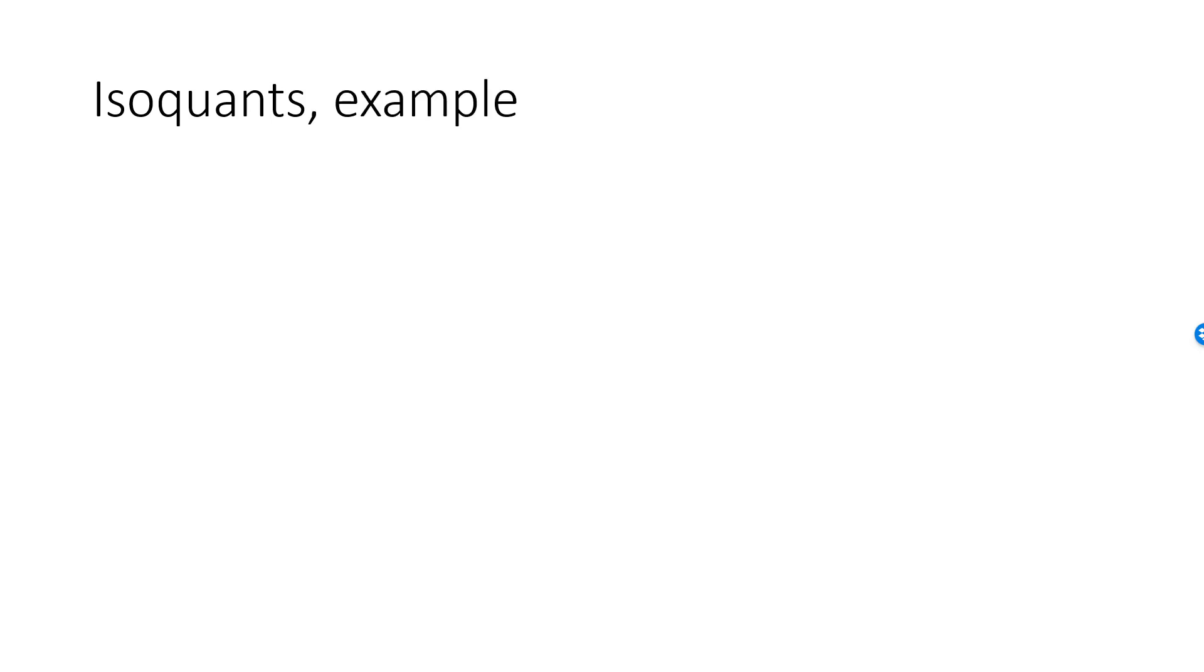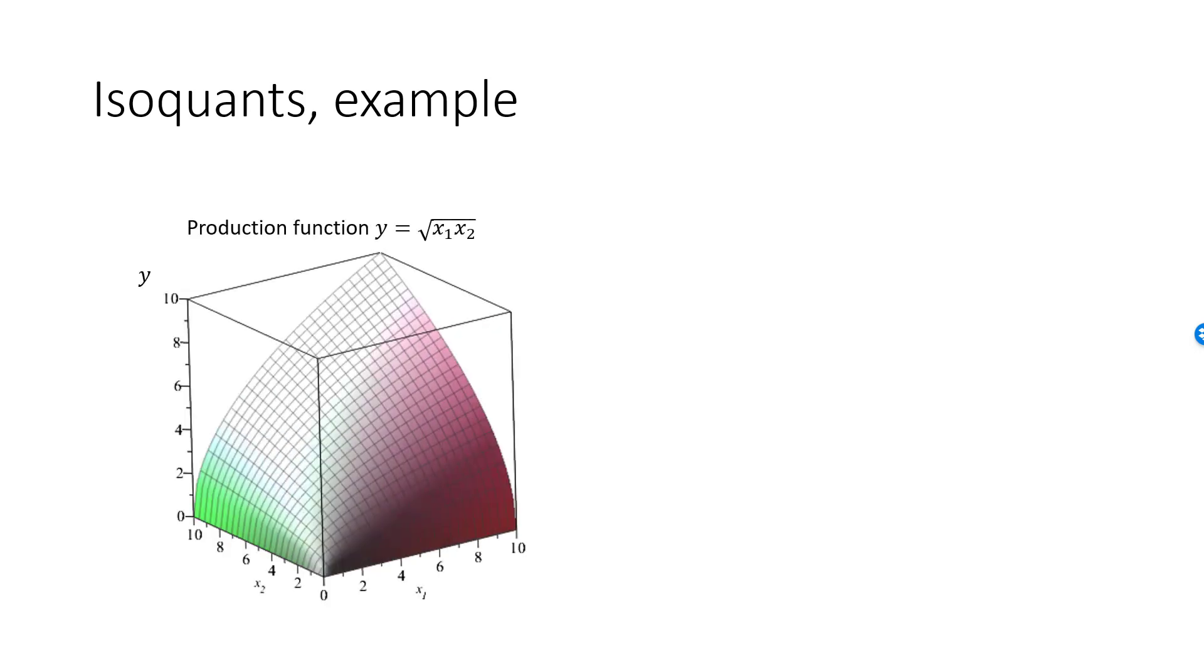Here is an example of a production function and an isoquant. In this example, the production function is given by y equals square root of x1 times x2. Here is a graph of the production function. An isoquant for y equal to 4 is then the collection of all combinations of x1 and x2 where the height of this graph is precisely 4.